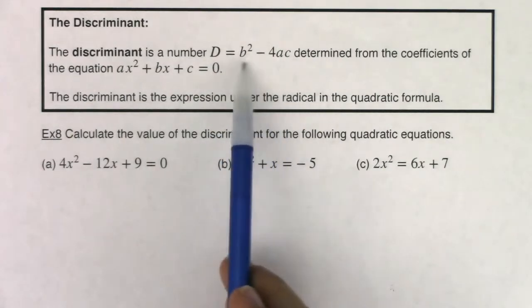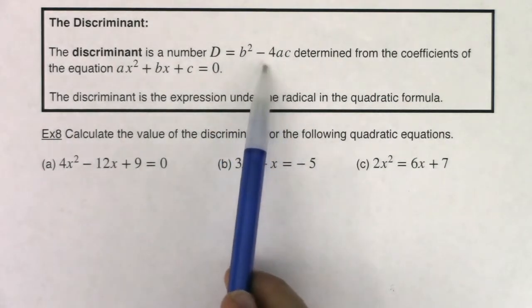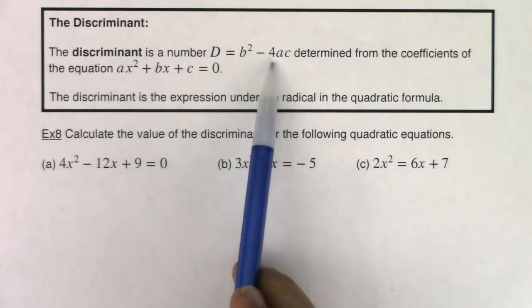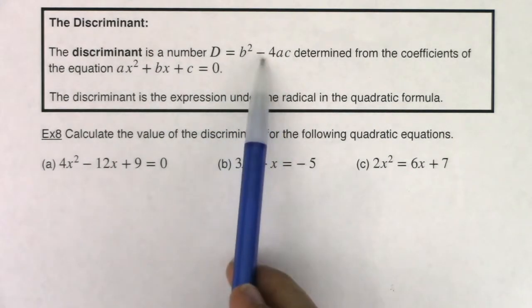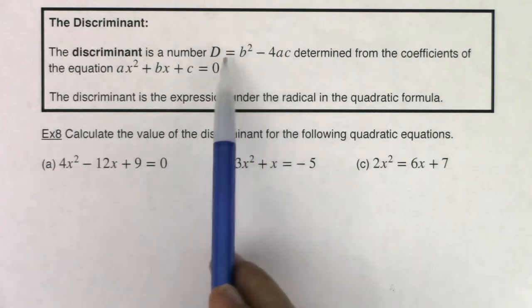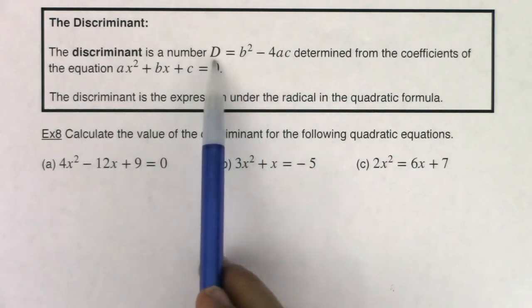It's the radicand of your quadratic formula. So it's the b squared minus 4ac. It's the part that's under the radical from the quadratic formula. So that gets its own vocab term called the discriminant, capital D.